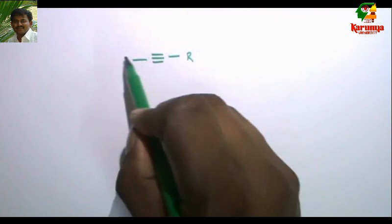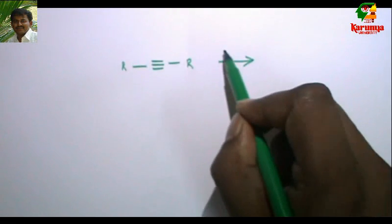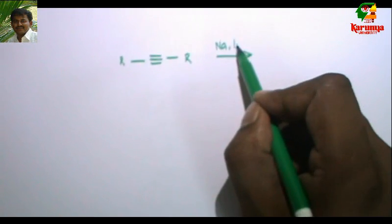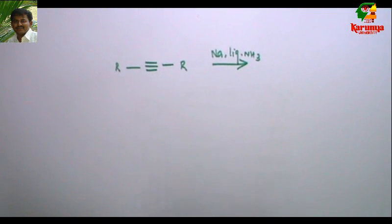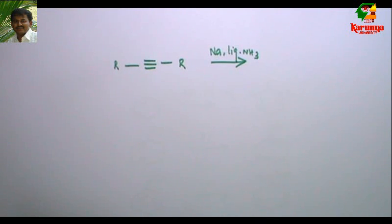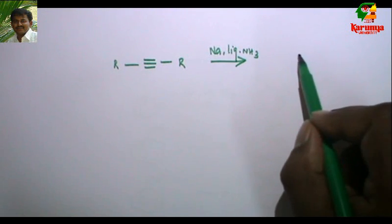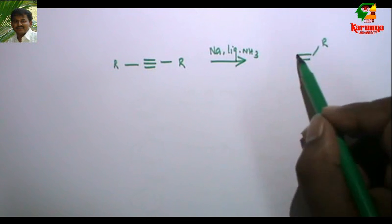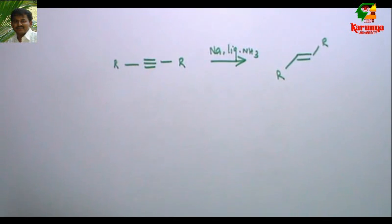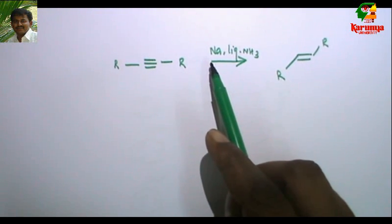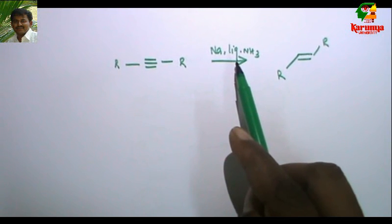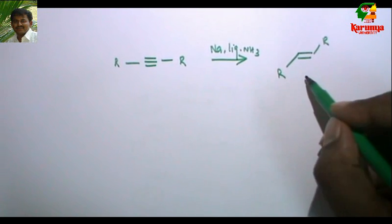The second reaction is reduction of an alkyne. The mechanism of this reaction is not very important, but the stereochemistry is very important. When an alkyne is treated with an alkali metal — either lithium or sodium — in the presence of liquid ammonia, it gives trans-olefin (E-olefin).